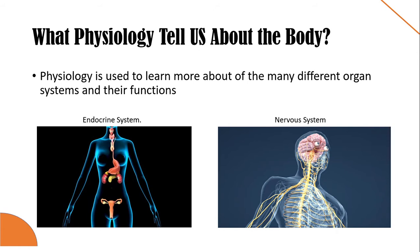What does physiology tell us about the body? Physiologists study the many different organs and systems and their functions. For example, the endocrine system has glands that make hormones, which are the chemicals that control many body functions. Another example is the nervous system, which uses specialized cells called neurons to send signals all over our body. These electrical signals help us move our limbs and feel sensations such as pain.